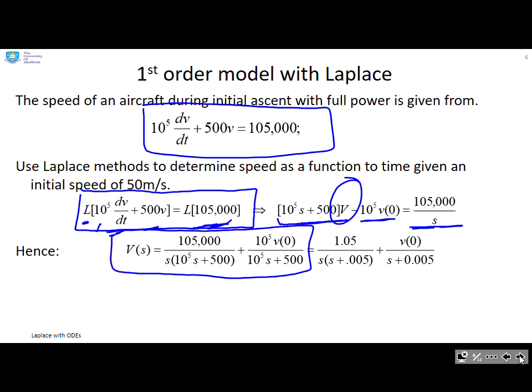v equals 105,000/(s·(10⁵s + 500)) + 10⁵·v(0)/(10⁵s + 500). Now I can get rid of some of these large numbers and simplify that, which is what I've done here.